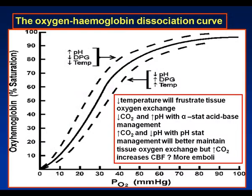If we just look at the oxygen-hemoglobin dissociation curve for a moment: as temperature reduces, the alkalinity of blood increases. This means the dissociation curve goes to the left, and this will jeopardize tissue oxygenation. It's for this reason that pH stat management has been considered in some cases, although it's not commonly used.